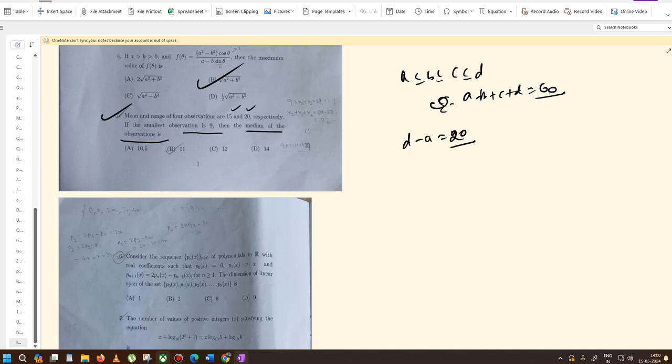Since the smallest observation is 9, we have 9 + b + c + d = 60, so b + c + d = 51.